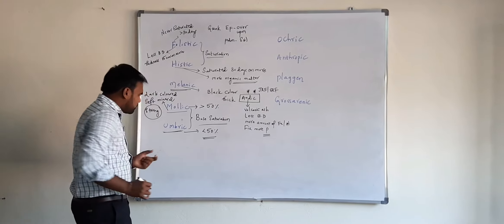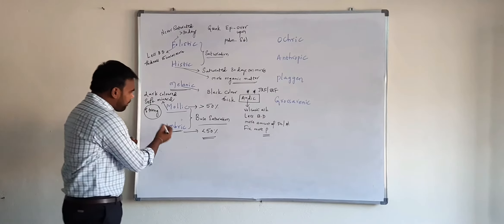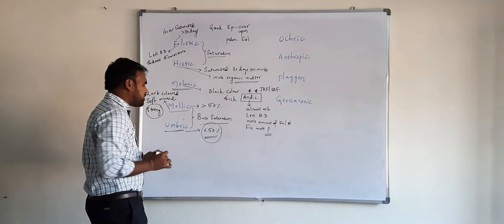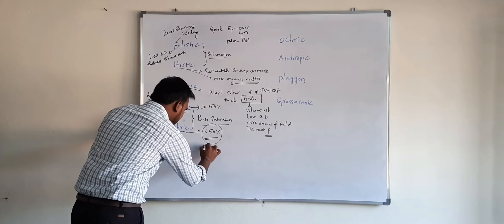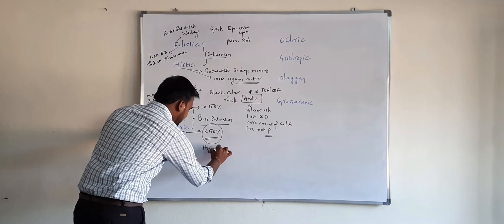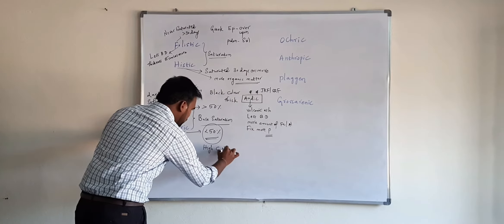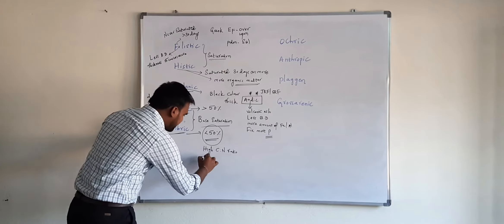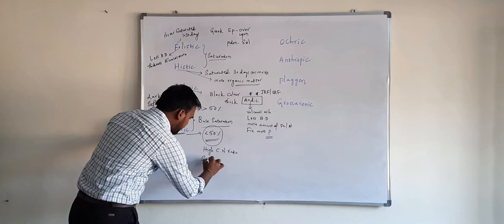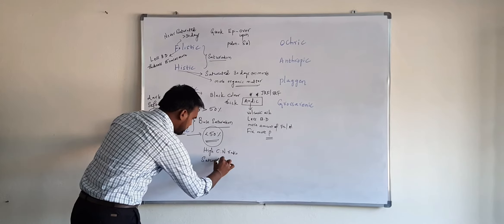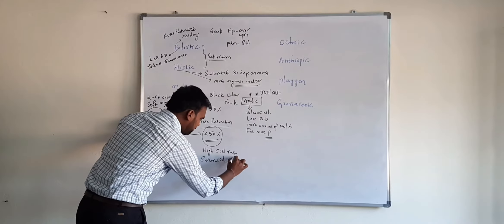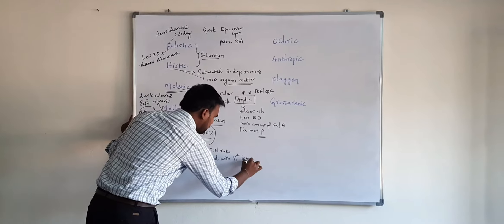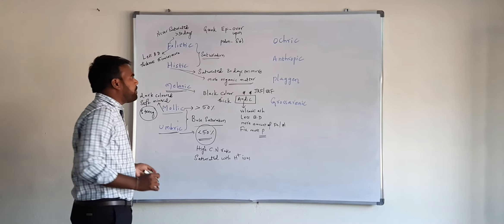Coming to umbric epipedan — it has less than 50% base saturation and a high C:N ratio. This particular epipedan is saturated with H-plus ions. So this is about mollic and umbric epipedans.